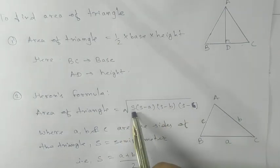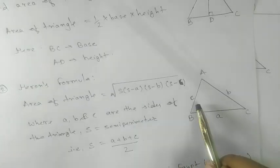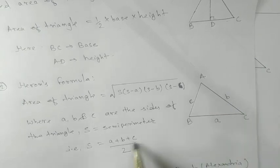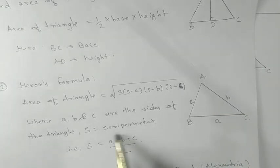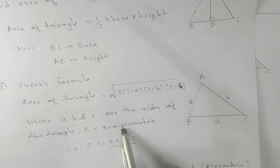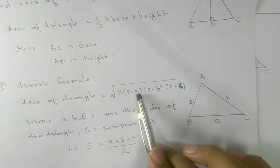What is S? S is the semi-perimeter. Perimeter means the sum of all sides, and divided by 2 gives the semi-perimeter. So S is the semi-perimeter — half of the perimeter is called the semi-perimeter.